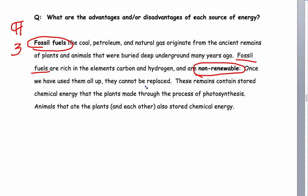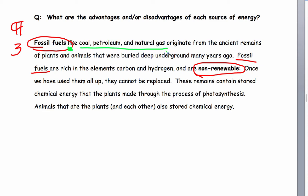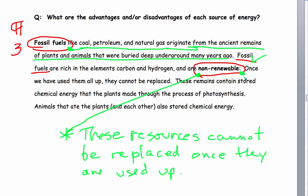If you get your green colored pencil, let's get these descriptions marked. Fossil fuels — coal, petroleum, and natural gas — come from the ancient remains of animals and plants that were buried many, many years ago. Let's get these all linked. And non-renewable resources means once we have used them, they cannot be replaced.